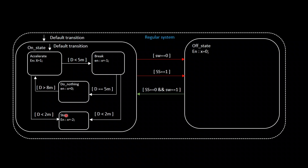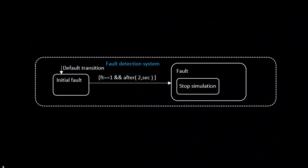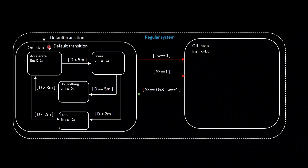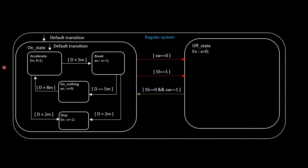Now we will see how the logic is implemented for the cruise control. First we will go into the regular logic, then the fault-based logic. In the regular logic, the first state is represented as the on state and the second as the off state. Since these states are represented with a solid boundary, it is called a sequential state — or OR decomposition for the state flow chart. When the on state is executing, the off state will not execute.